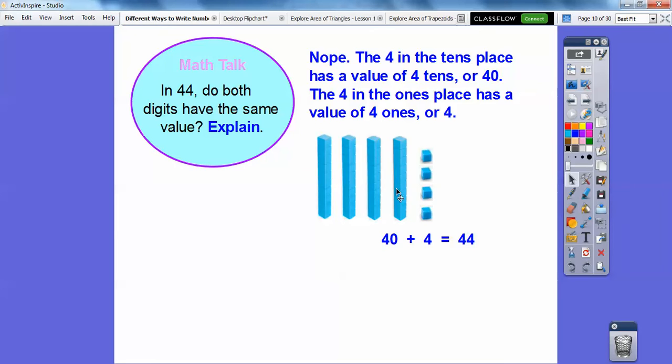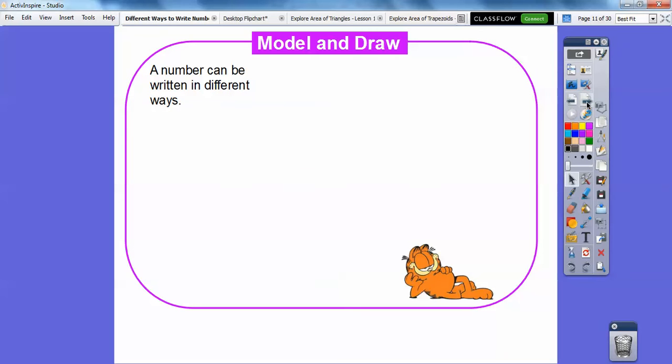Here's our 40 for this four right here, and then here's our four ones right here for this four right here. So 40 plus 4 equals the 44 right there.